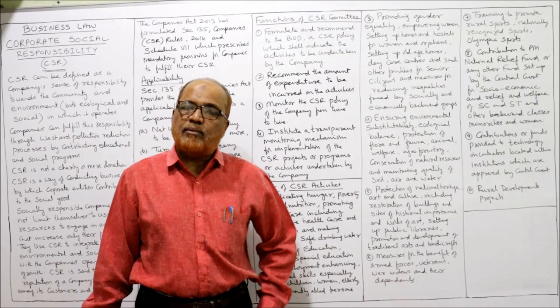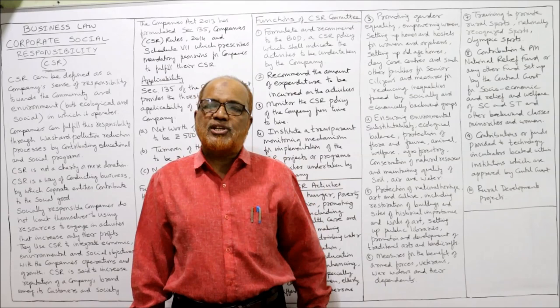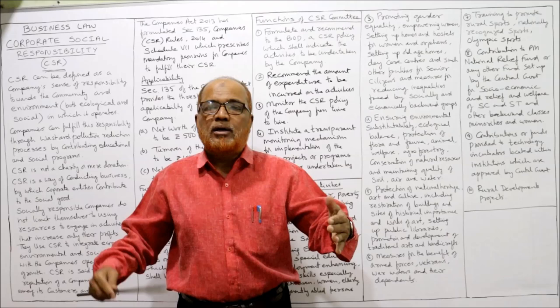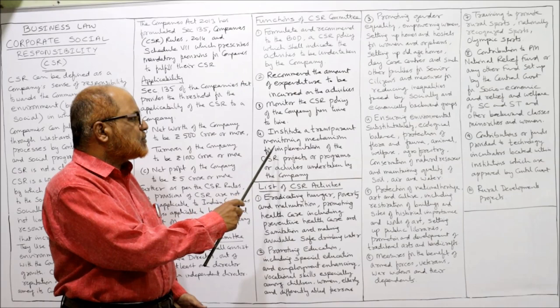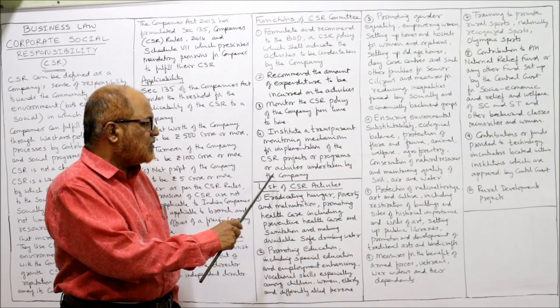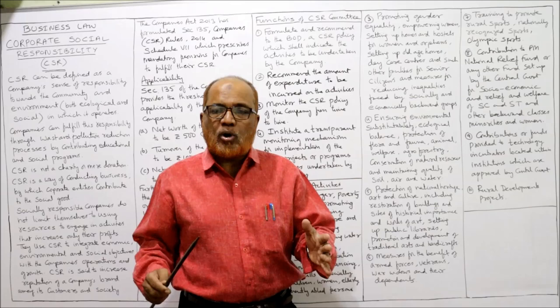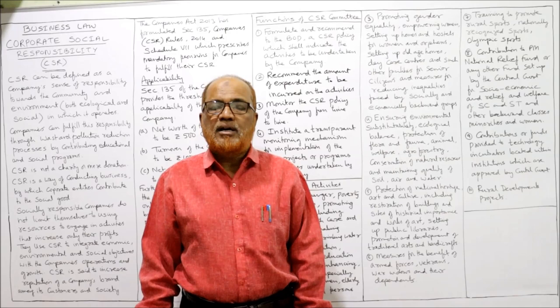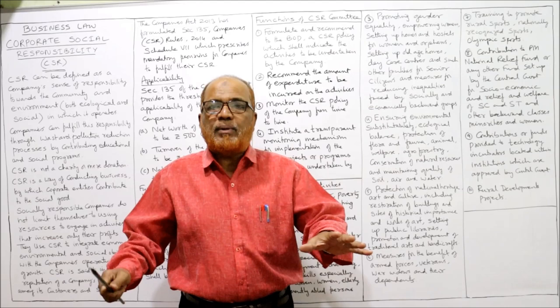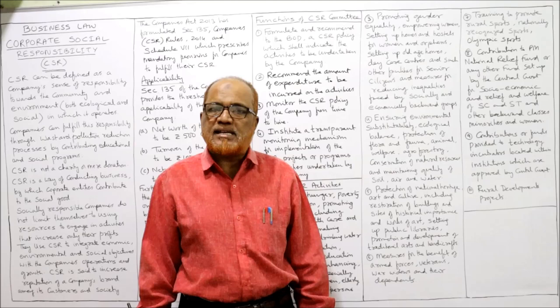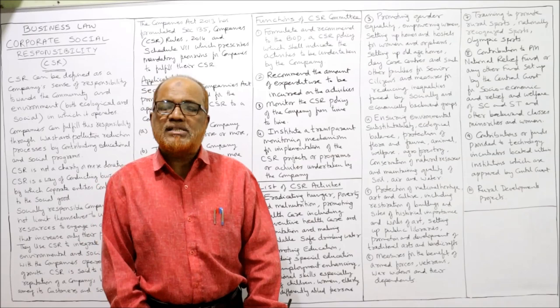Third, the CSR committee must monitor the CSR policy of the company from time to time — only making a plan is not enough, implementation is required. Fourth, it must institute a transparent monitoring mechanism for implementation of CSR projects or programs undertaken by the company. All policies and activities should be transparent and disclosed to the Board of Directors and to the members, so everybody is clearly aware of the CSR activities undertaken by the company.